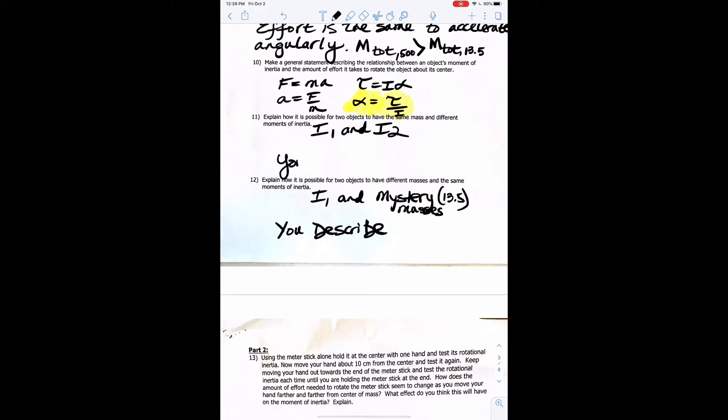And then they both had two 500-gram masses and a meter stick being spun. So you can talk about that with your explanation. Number 12, explain how it is possible for two objects to have different masses in the same moment of inertia. And this is what we saw with I1 and the mystery setup.